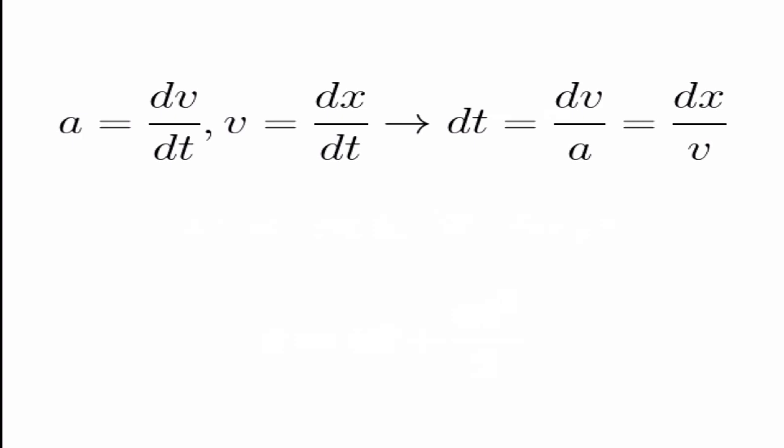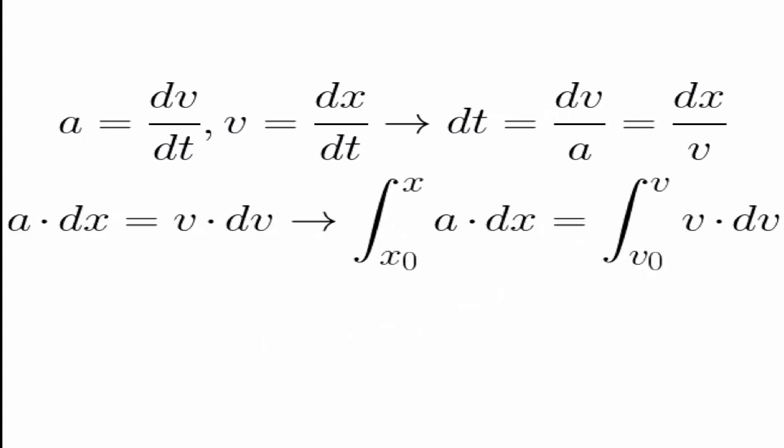Finally, we know that a is dv by dt, and that v equals dx by dt. Now, if we solve both of these equations for dt, and then compare them, we get dt is equal to dv divided by a, which is also equal to dx divided by v. By expanding both sides of the equation, we get a dot dx equals v dot dv. This implies that the integral between our initial point x zero and our final point x of a dot dx is equal to the integral between our initial velocity u and our final velocity v of v dot dv. Therefore, sa equals v squared minus u squared over 2, which implies v squared equals u squared plus 2as. This is the third and final Suvat equation we need.